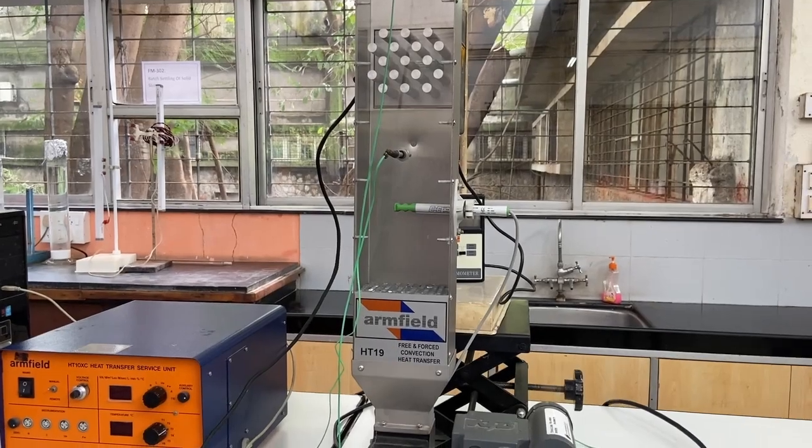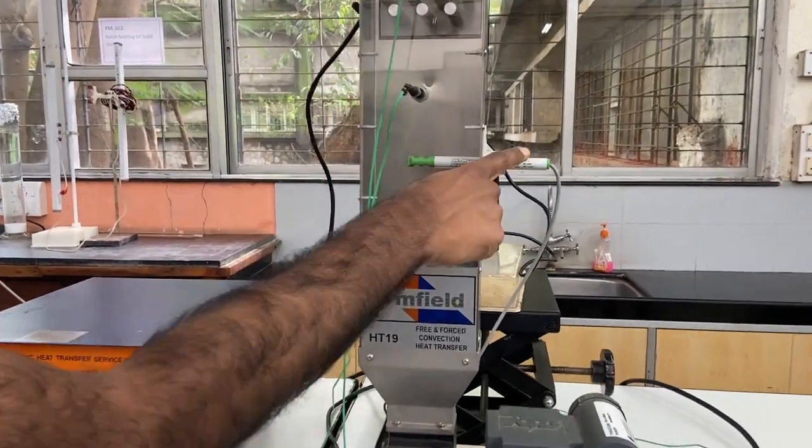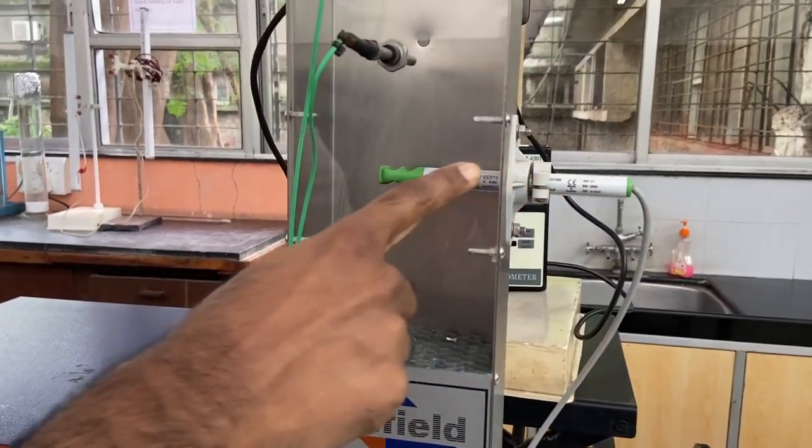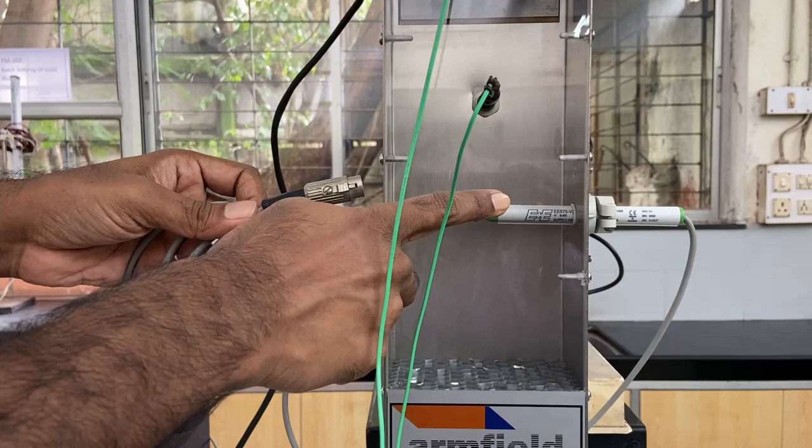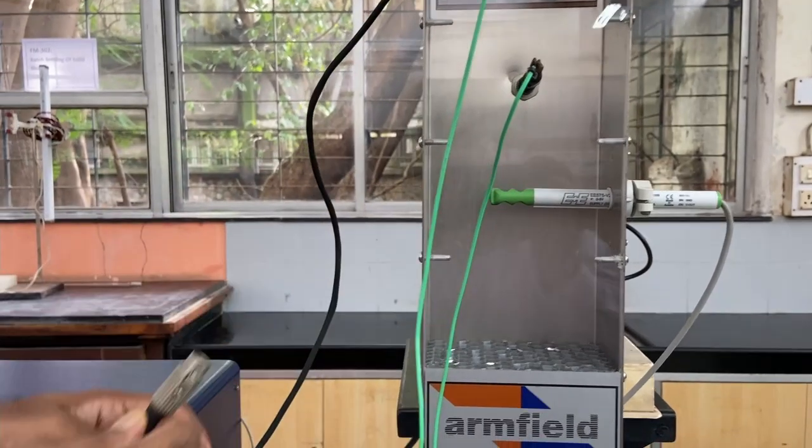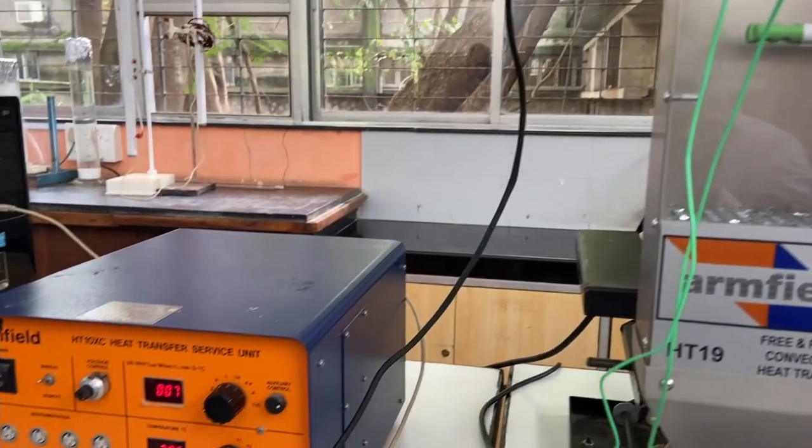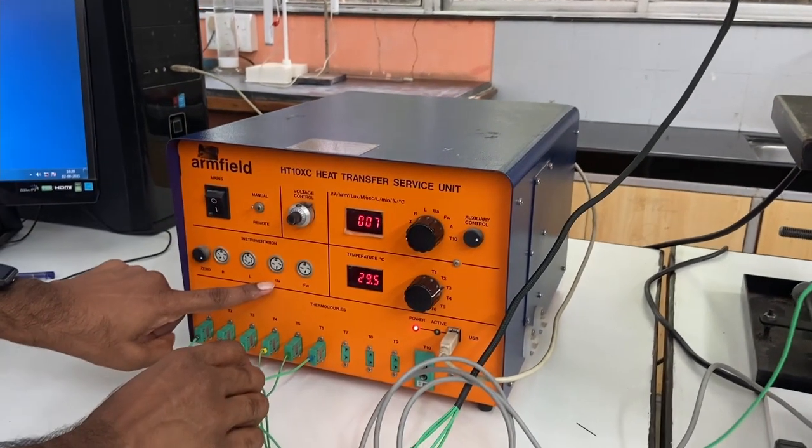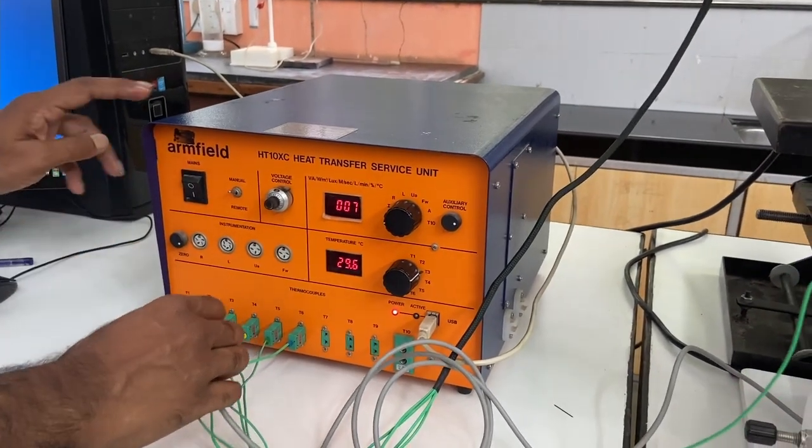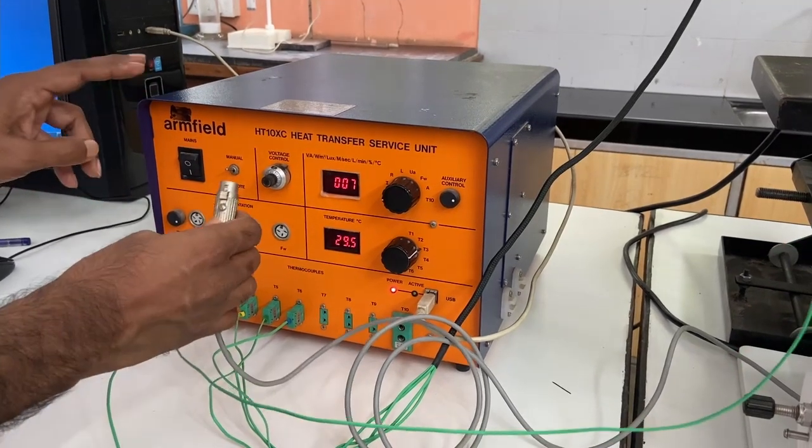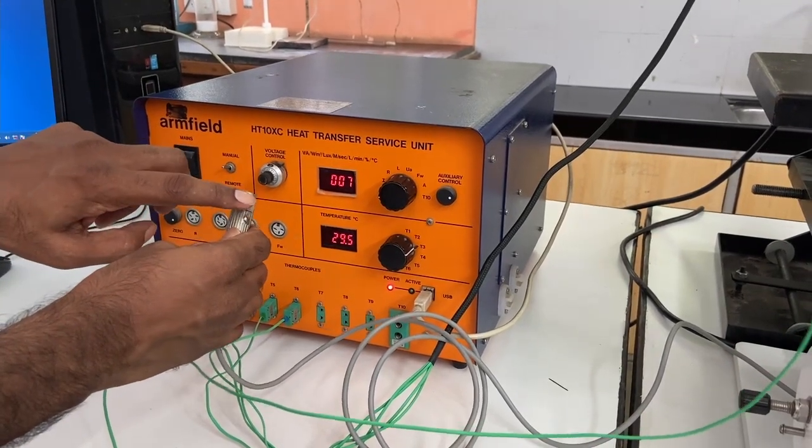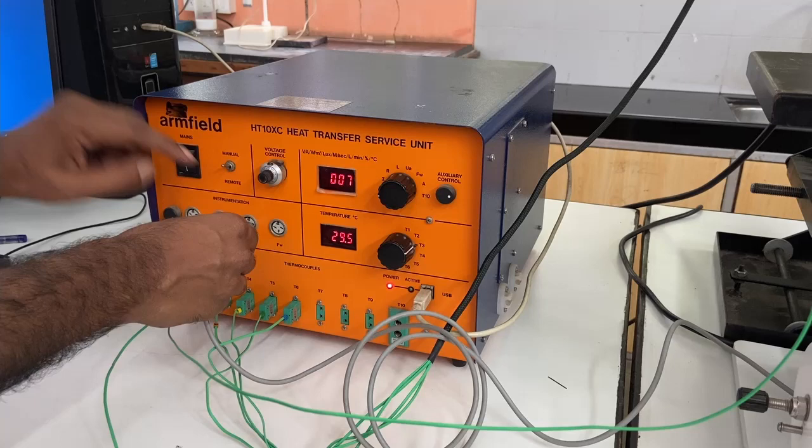The flow rate of air is measured using an air velocity sensor that is placed here. The other end of the velocity sensor goes to the heat transfer unit into the socket marked as Ua for velocity of air. Note that this top notch has to be on the top surface of the socket.